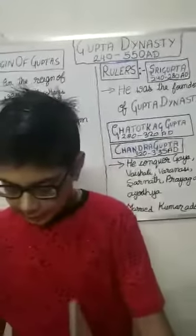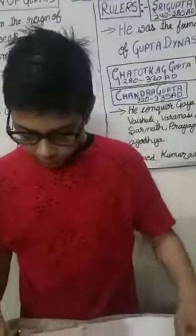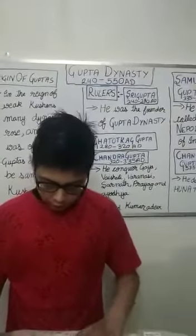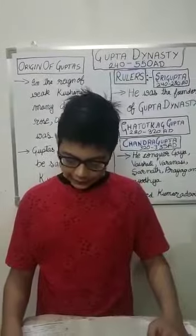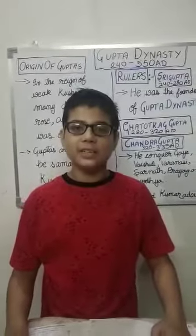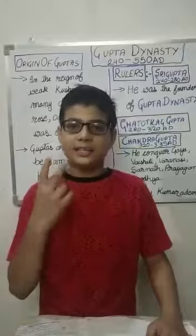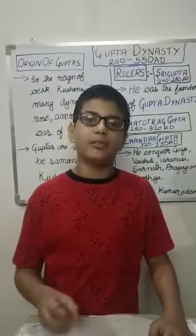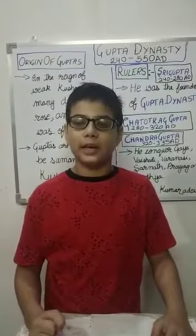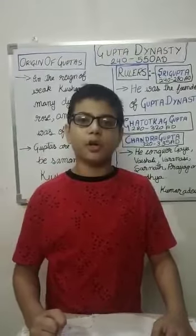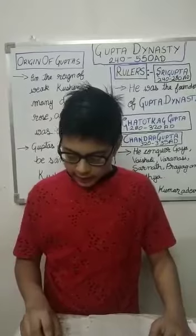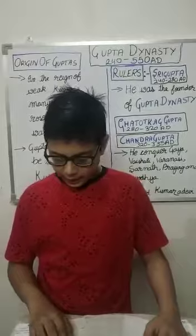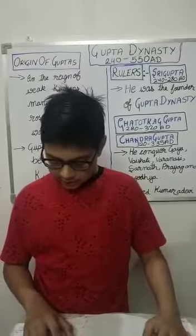After Chandra Gupta Vikramaditya, Kumar Gupta became ruler in 414 AD. In his reign, the Huns attacked India a second time, and his son Skanda Gupta went and defeated them. Both Kumar Gupta and Skanda Gupta were able rulers. The reign of Skanda Gupta was 455 AD to 467 AD.